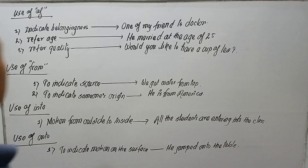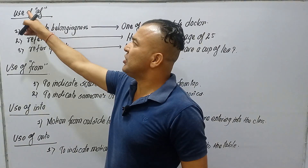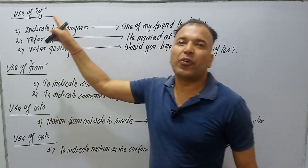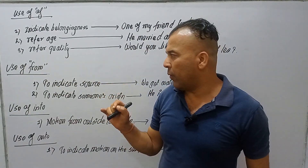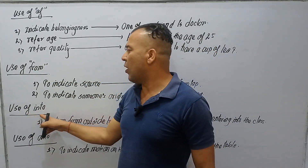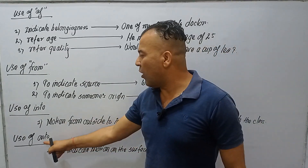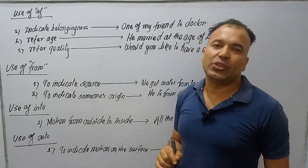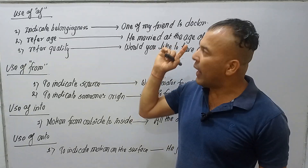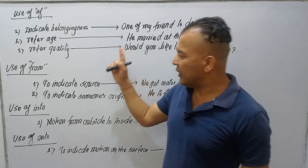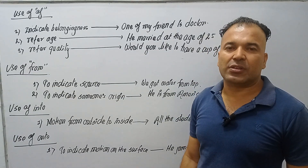Let's discuss the use of prepositions: OF, FROM, INTO, and ONTO. We will learn how to use these prepositions grammatically correctly in English grammar.